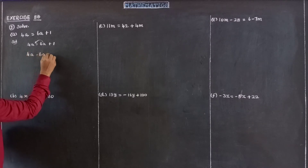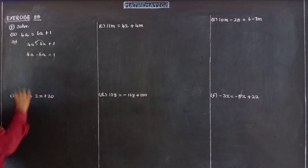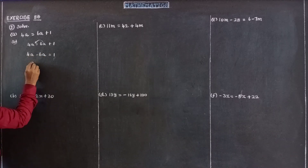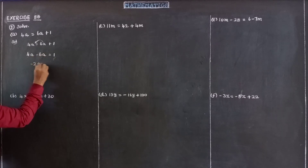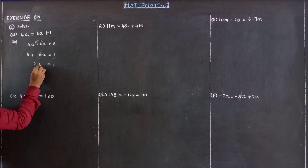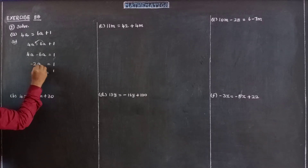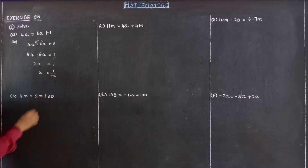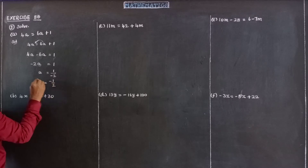4A minus 6A is equal to 1. Since 4 and 6 have different signs, we subtract: 6 minus 4 is 2, giving minus 2A equals 1. Dividing both sides by minus 2, A is equal to minus 1 over 2.